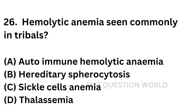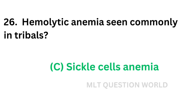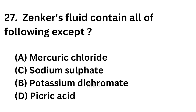Question number twenty-six: Hemolytic anemia seen commonly in tribals — Option A: Autoimmune hemolytic anemia, Option B: Hereditary spherocytosis, Option C: Sickle cell anemia, Option D: Thalassemia. The correct answer is Option C — Sickle cell anemia. The anemia which can be seen in tribals is sickle cell anemia.